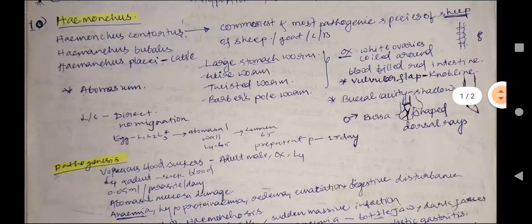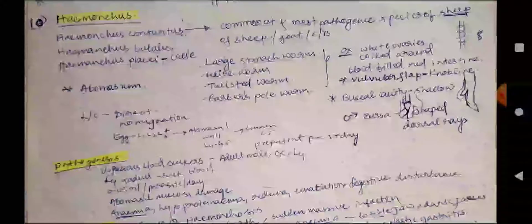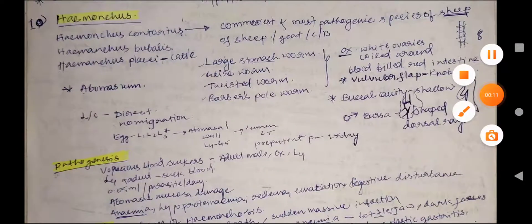In this video we will discuss genus Haemonchus. The species of the genus Haemonchus are Haemonchus contortus, Haemonchus bubalis, and Haemonchus placei.